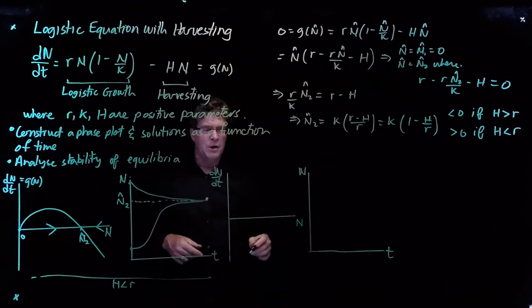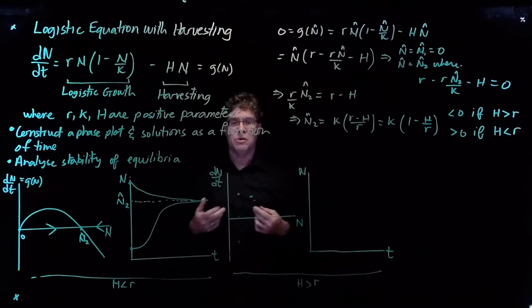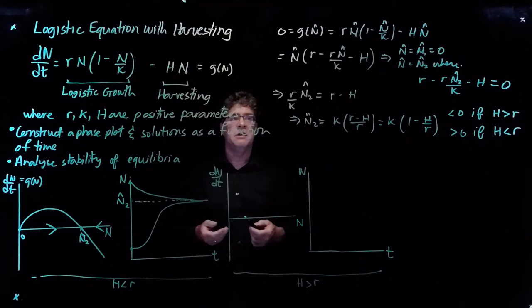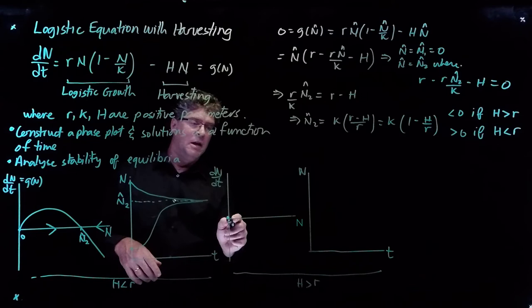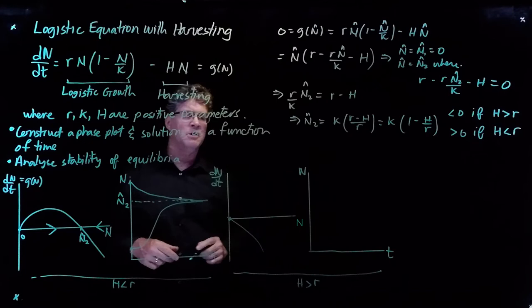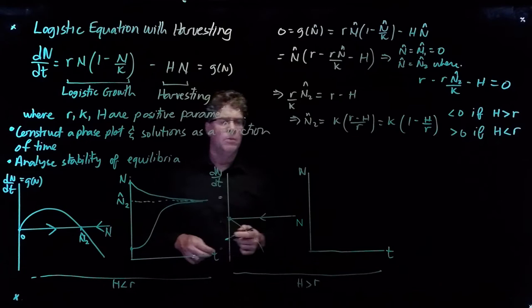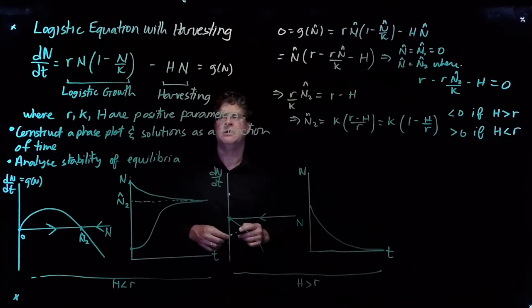In the second scenario, h is greater than r — the harvesting rate exceeds the intrinsic growth rate. In that case, our second equilibrium n2-hat is negative. Since we're only interested in non-negative population values, our parabola in the positive region just declines, and we only have the zero equilibrium. A population starting anywhere positive will decline towards zero.